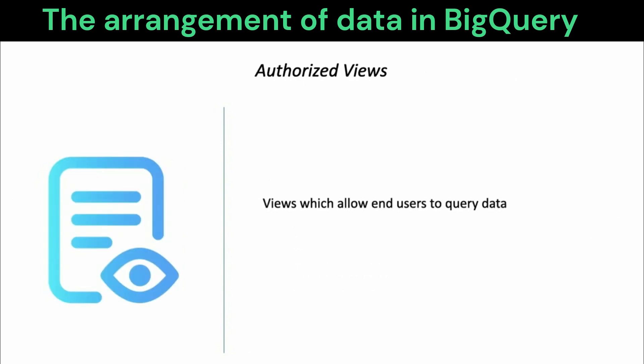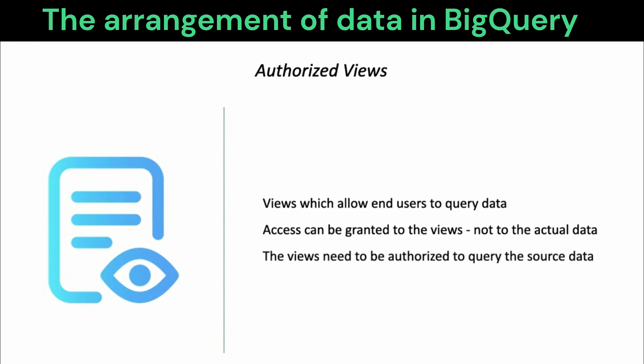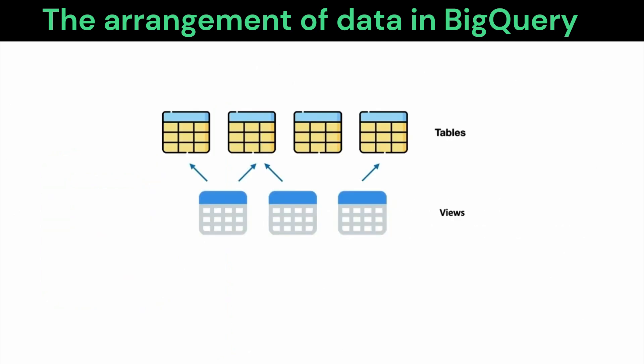One more type of view supported in BigQuery is the authorized view. Users can be granted access to these views, and significantly, this is not the same as granting them access to the underlying data. If an authorized view is created by applying some filters on underlying data, a user of the view will only be able to view this filtered data and may not have access to the source tables. To enable authorized views, the view itself needs to be authorized to query the source data.